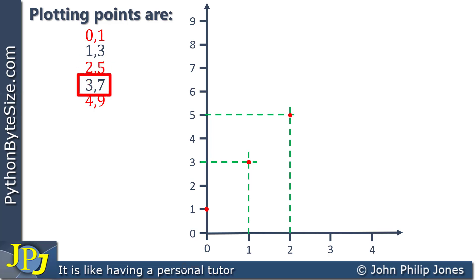Carrying on to the 3, 7, you can see there's the dotted line for the 3, there's the dotted line for the 7. Where they cross each other, we put the plotting point.